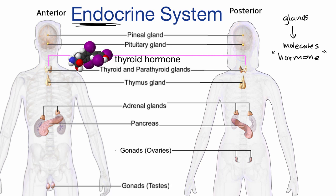For example, the thyroid gland produces thyroid hormone. Looking at the molecular structure, you can see carbons in dark gray, hydrogens in white, oxygens in red, nitrogen in blue, and these big atoms are iodine.